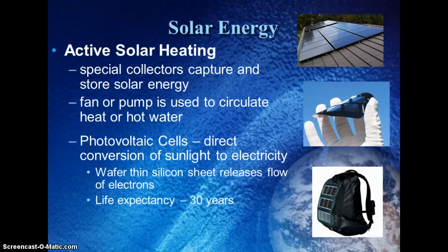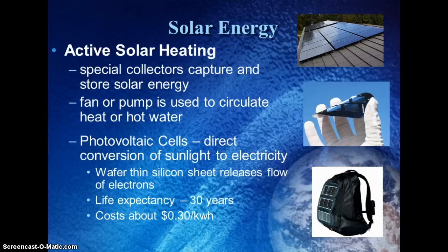PV cells last about 30 years. They can be made into shingles for roofs, and you would just replace them like a regular roof. They cost about $0.30 per kilowatt hour to install, which is more expensive than using non-renewable resources, but once they are installed, you're no longer paying electric costs.